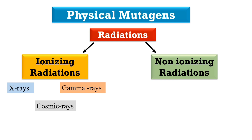Non-ionizing radiations include ultraviolet rays. These UV rays cause the formation of pyrimidine dimers — that is, thymine dimers — which distort the DNA helix and cause errors in DNA replication and transcription. This error in replication ultimately results in mutations.